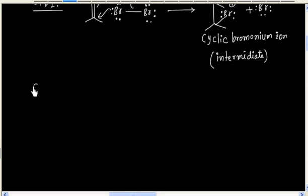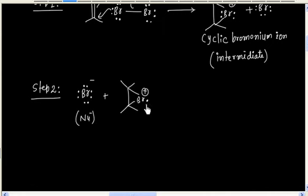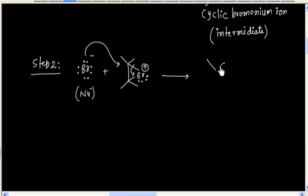In the next step, this cyclic bromonium ion — the intermediate — is attacked by Br⁻. So Br⁻ acts as a nucleophile in this reaction. And finally, we will have dibromoalkane as the product.